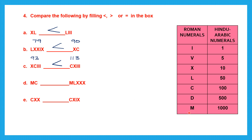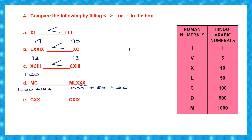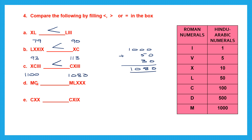Next: MC is 1000 plus 100 equals 1100. On the other side, MLXXX is 1000 plus 50 plus 30 equals 1080. So 1100 is greater than 1080. Then: CXX is 100 plus 20 equals 120, and CXIX is 100 plus 10 plus 9 equals 119. So 120 is greater than 119.